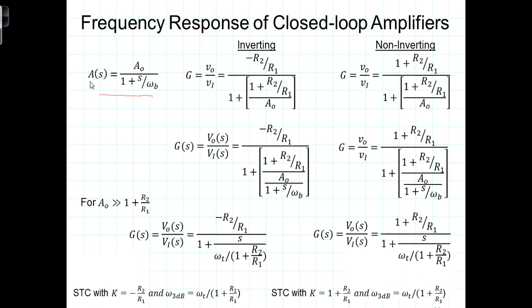We saw that for internally compensated operational amplifiers, the open-loop gain A was actually a function of frequency, and it had a single-time constant low-pass filter characteristic to it.